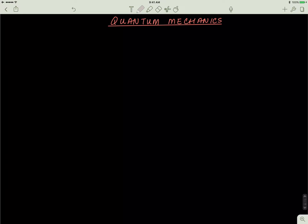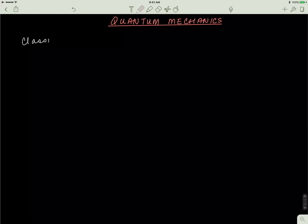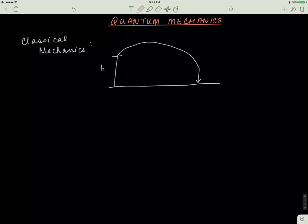Before quantum mechanics we had something called classical mechanics, and we still have it now. Classical mechanics is very good at describing things that are on our scale. For example, let's say you're standing on a building and you throw a ball from it — intuitively you know it's going to land somewhere on the ground. You can predict exactly where it will land based on initial conditions, such as the velocity and angle theta at which you throw it.